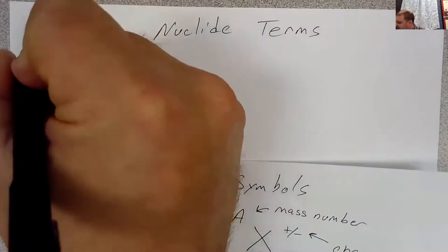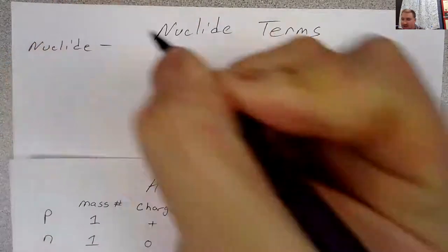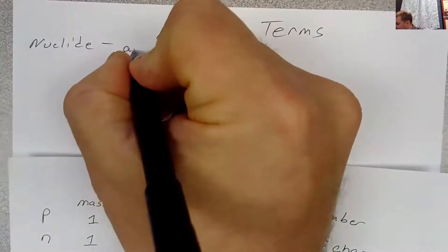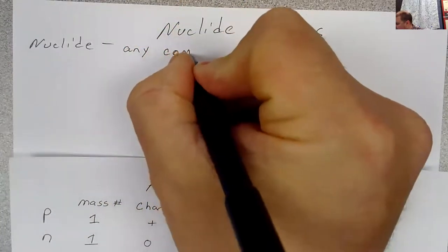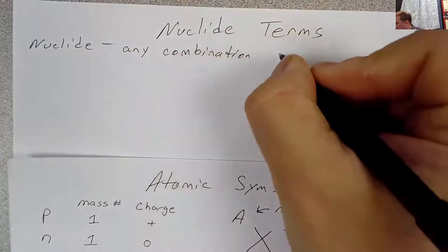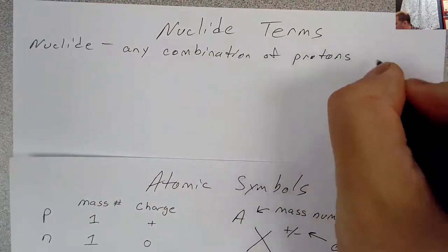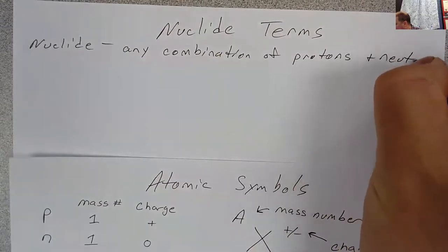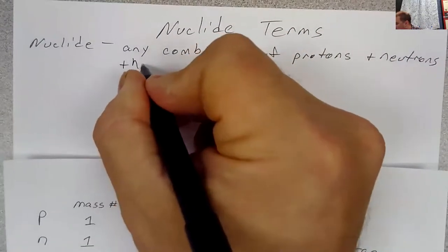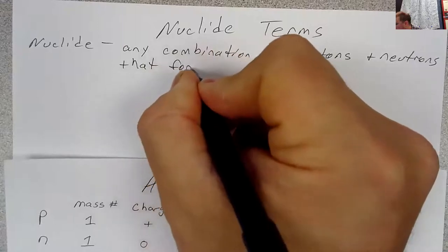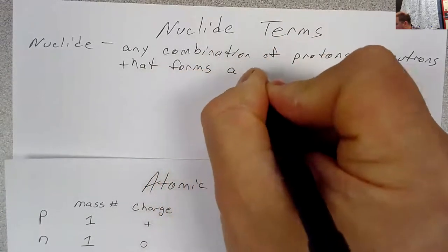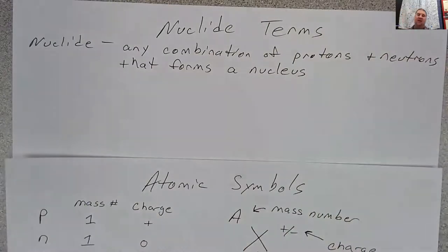So the first thing is what is a nuclide? A nuclide is any combination of protons and neutrons that forms a nucleus. So you could imagine taking any combination of protons and neutrons and putting those together and forming a nucleus, in other words, the center of an atom.